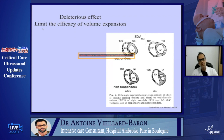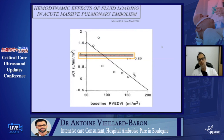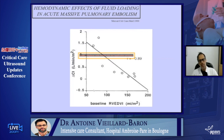We know from many papers that RV failure or RV dilatation may limit the efficacy of volume expansion. In septic shock, using transpulmonary thermodilution, there was a significant difference in RV size between fluid responders and non-responders — bigger RV meant lower response to fluids. Similarly, in pulmonary embolism (Bicetre group, Alain Mercat, 1999), bigger RV before fluid expansion meant lower increase in cardiac index after fluid expansion.